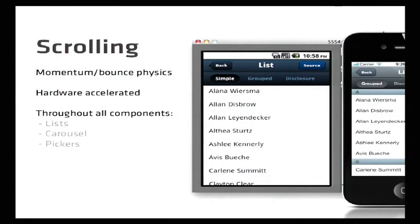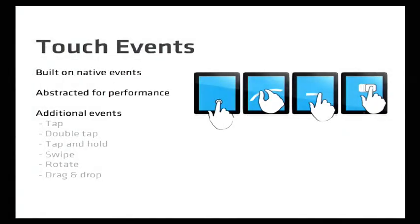Scrolling is probably the first thing most web developers try to address when building a web application on mobile, and it's the first thing they hit their head against. Independently scrollable areas are not straightforward on mobile because there's no position fixed — the notion of what a viewport is on mobile is very different than on desktop. Your window size and viewport are the same on desktop, but not on mobile. Apple removed it because of pinch zoom — otherwise you get odd effects when zooming. Touch events also don't provide very good abstractions from the raw browser — you basically just get touch start, touch...